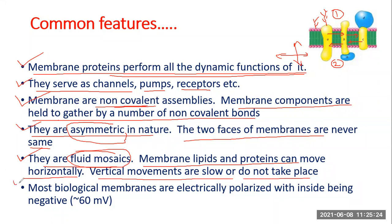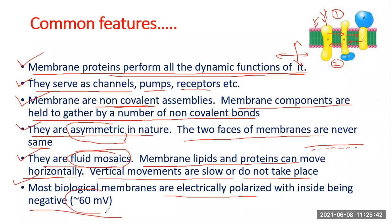Most biological membranes are electrically polarized, with the inside being negative. The inside of the biological membrane is more electronegative compared to the outside, and the potential is approximately 60 millivolts.